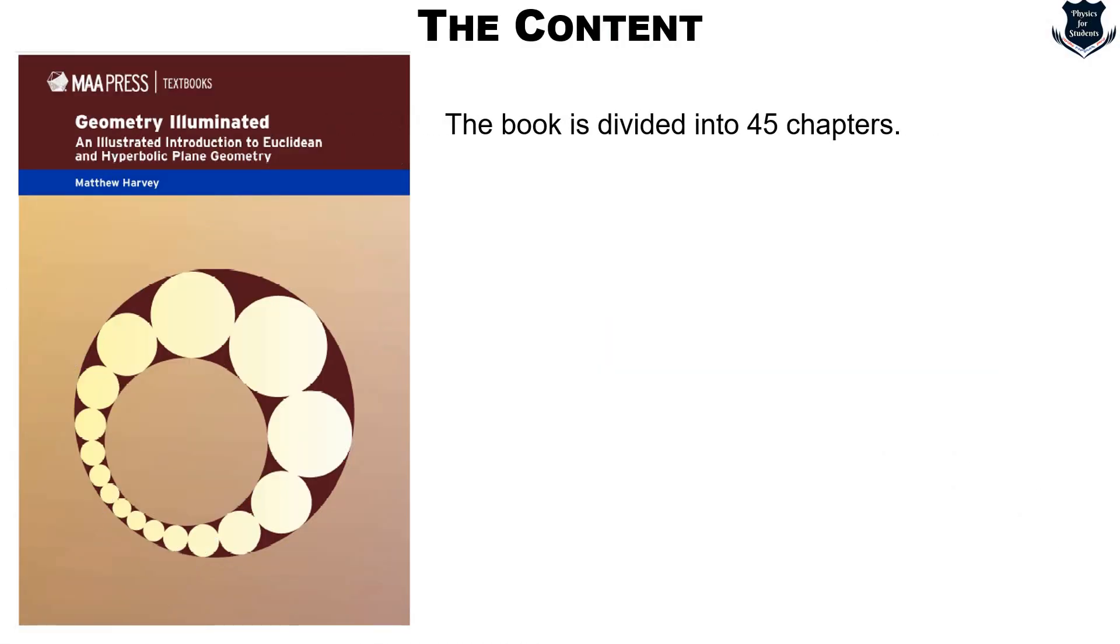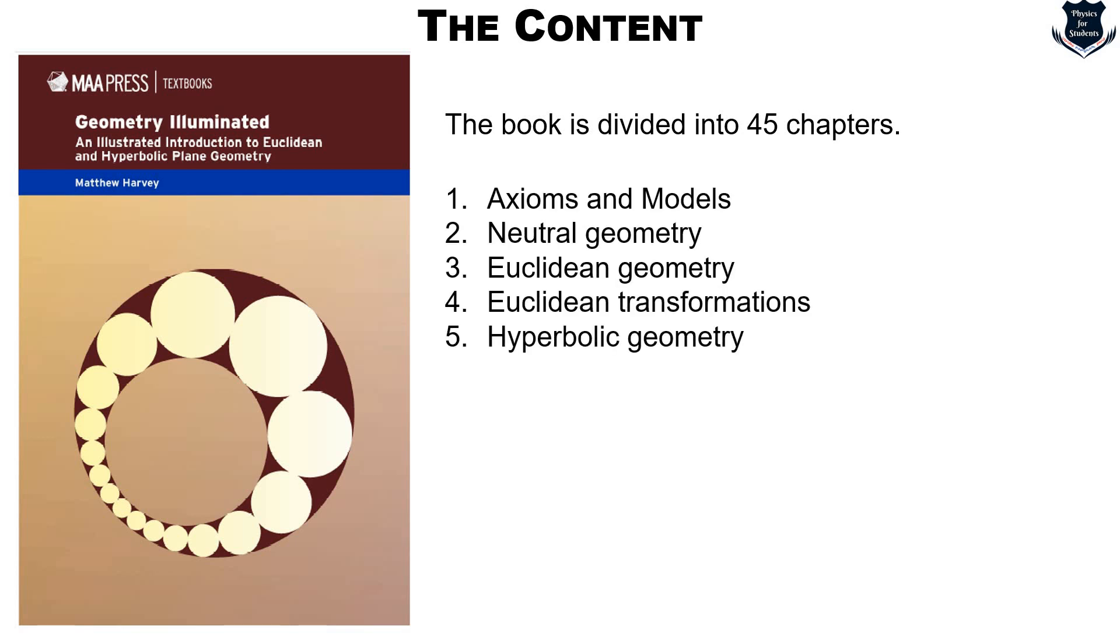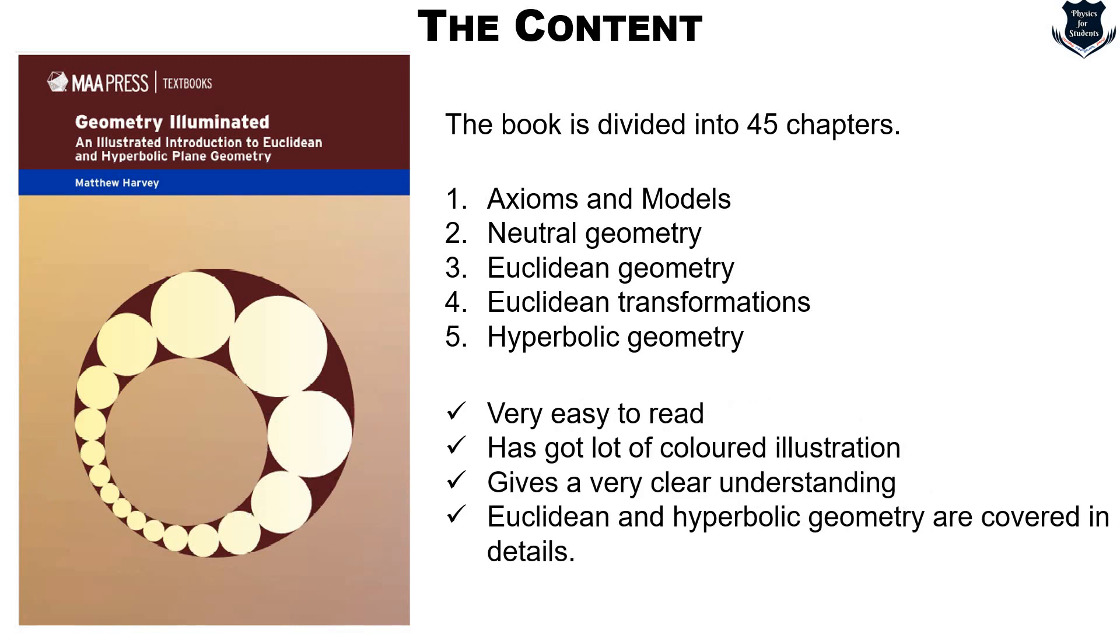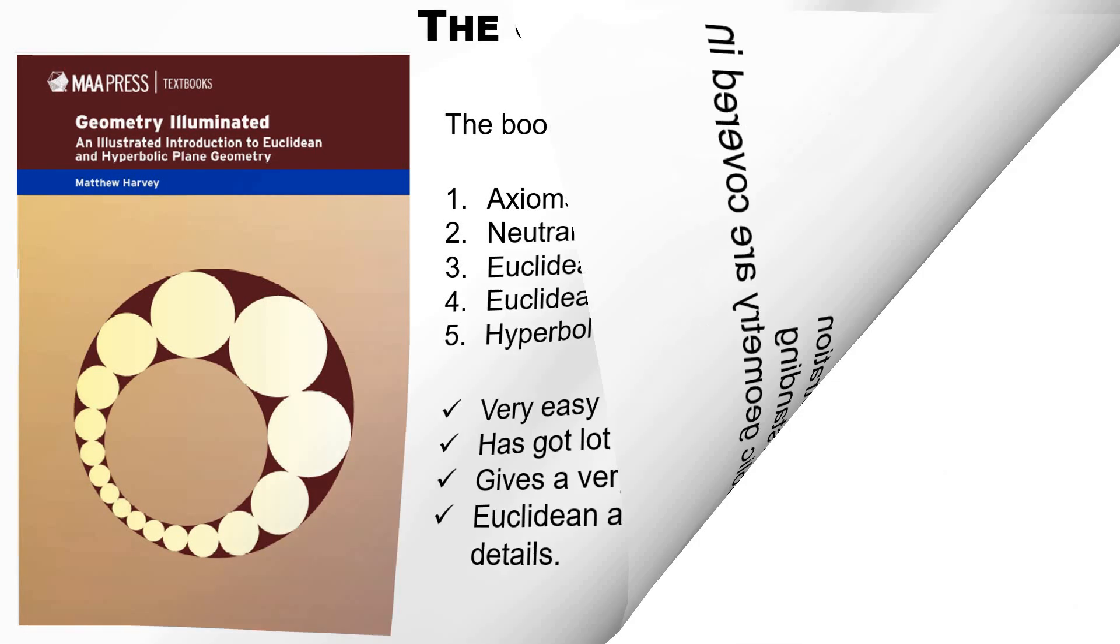This book is divided into 45 chapters. This is the overall structure: axioms and models which has got many sub-chapters, neutral geometry, Euclidean geometry, Euclidean transformation and hyperbolic geometry. So overall I can tell you that this is very easy to do and it has got lot of colored illustration. If you are purchasing a hard copy book it might be, because I read the reviews, some of them do not contain colored illustration. In that way I will tell you how to procure the soft copy of the book. It gives a clear understanding and Euclidean hyperbolic geometry are covered very much in details.